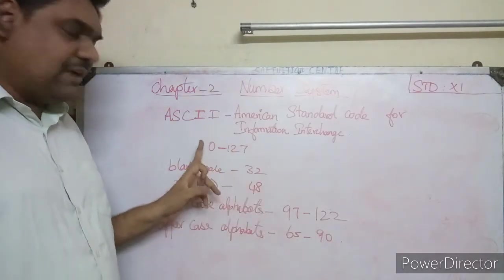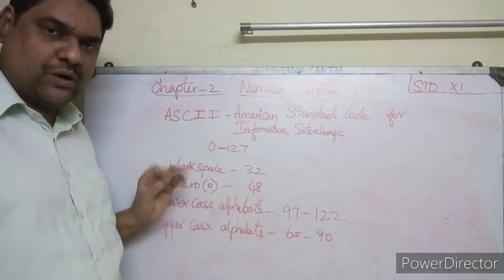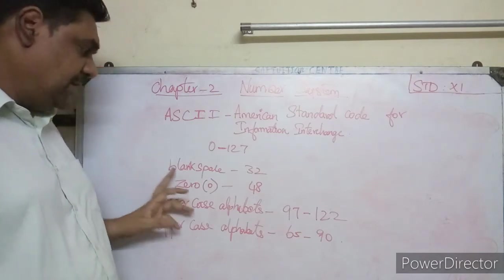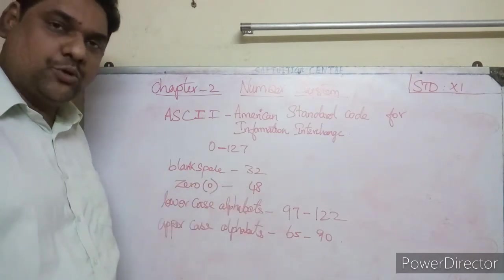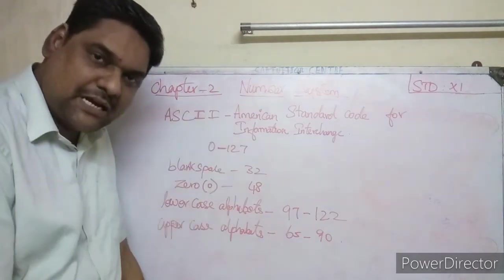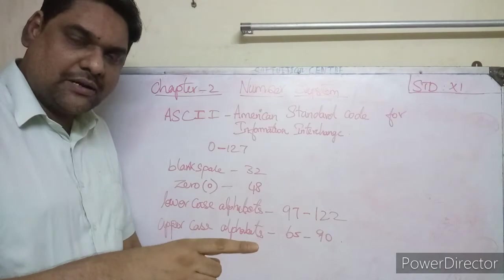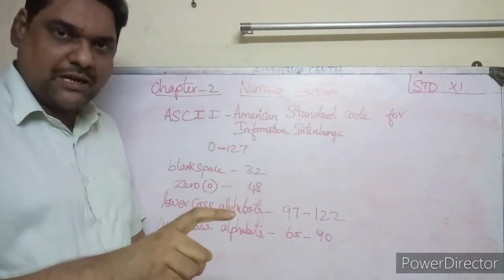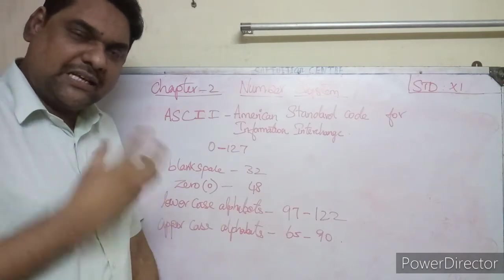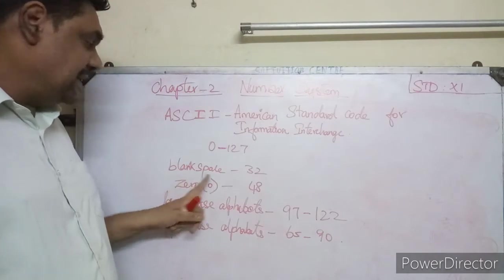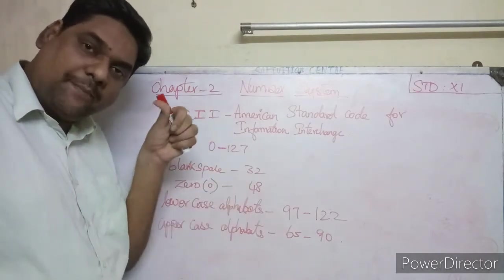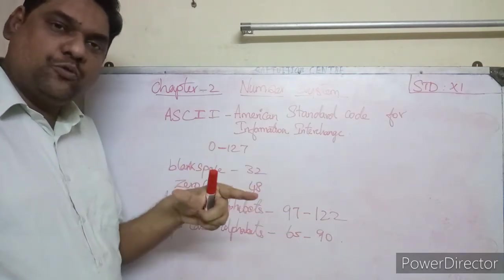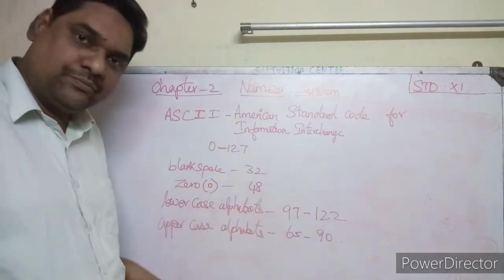Some examples: the blank space key has an ASCII value of 32. When you press the space bar on the keyboard, the computer stores the value 32, which is then converted to binary for storage.